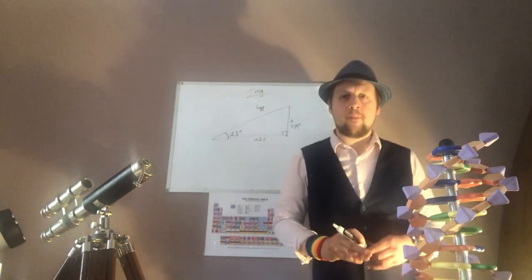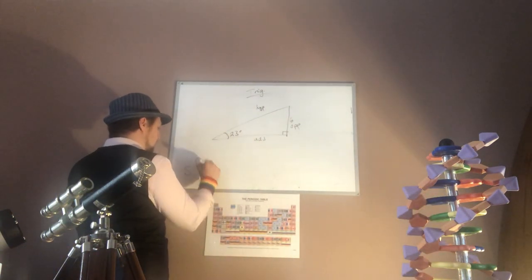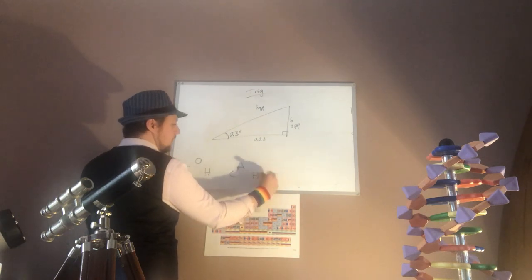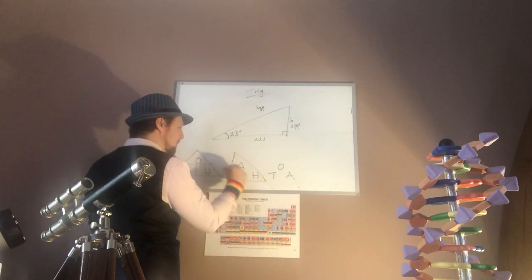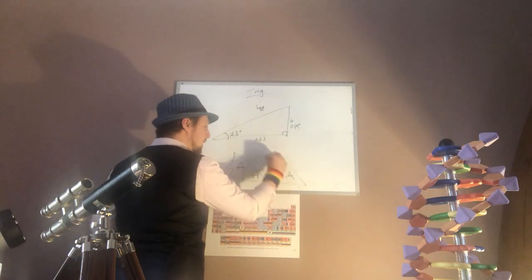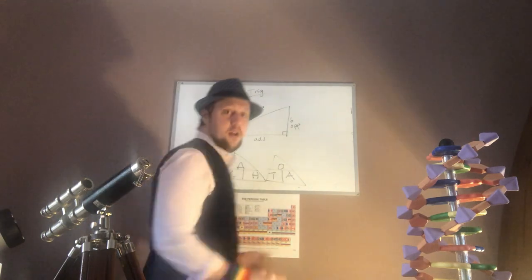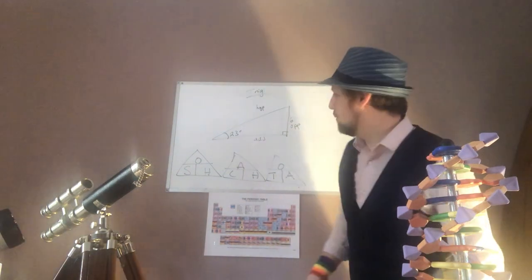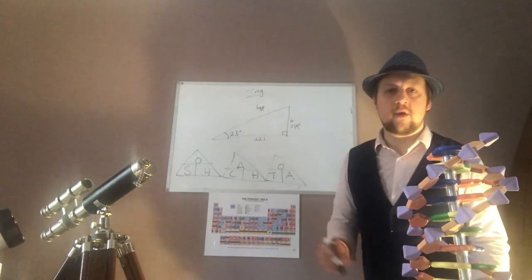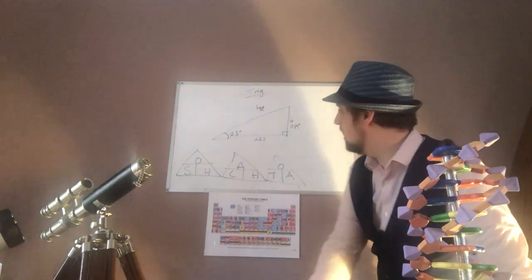Then you need to remember SOHCAHTOA. Everybody has a way of remembering it. Mine is a historical way that my dad taught me actually. Silly Old Hitler Couldn't Advance His Troops Over Africa. That just works for me. Never forgot it. I've done it in formula triangles because I know some of you like to use it this way. It makes things a little bit easier for you.